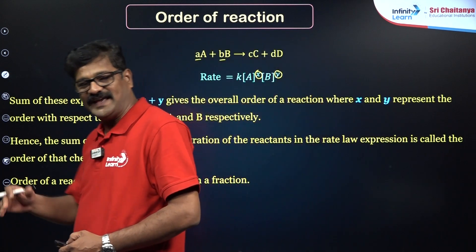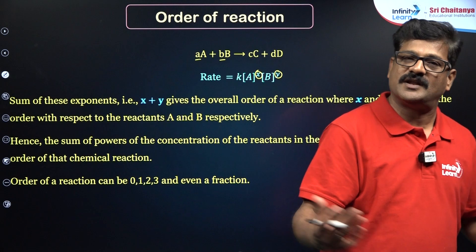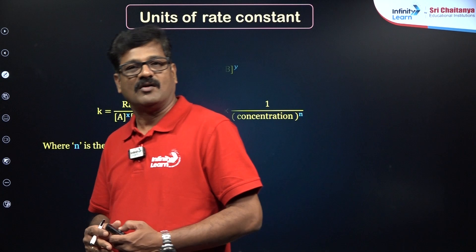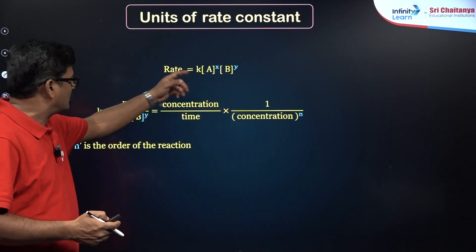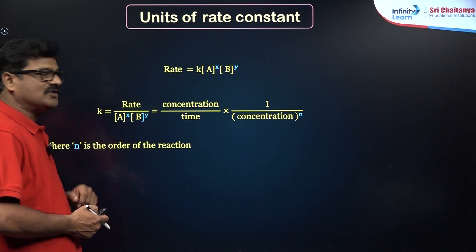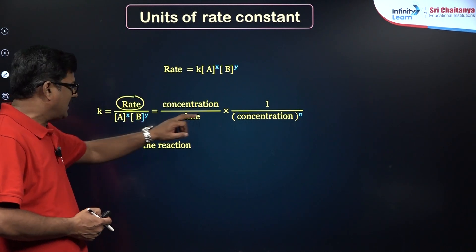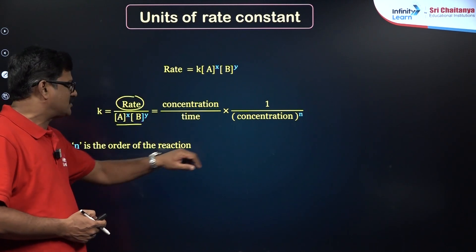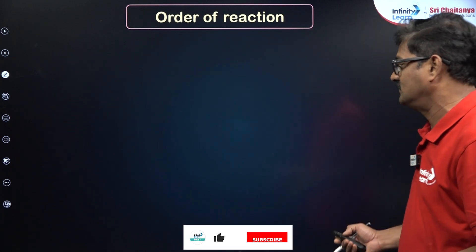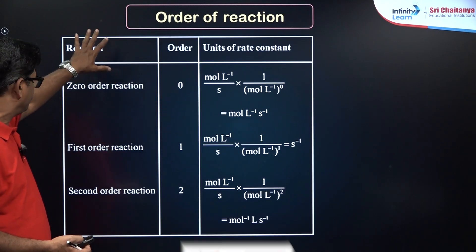Students, the order of the reaction can be 0, 1, 2, or any fraction number. The units of the rate constant are based on the order of a reaction. Rate = K[A]^X[B]^Y, so K = rate / ([A]^X[B]^Y) = (concentration/time) × (1/concentration^N), where N = X + Y, where N is the order of a reaction.